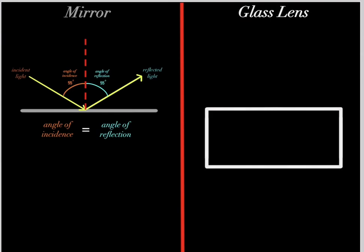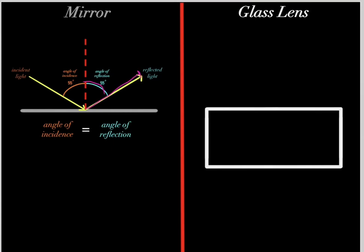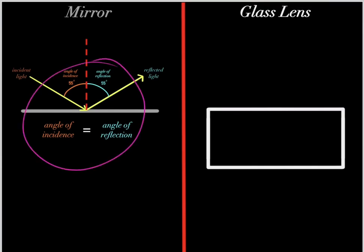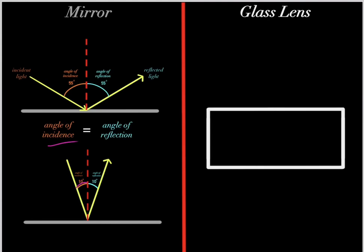Notice this angle of incidence was 55 degrees and this angle of reflection was also 55 degrees — and that's not a coincidence. The angle of incidence will always equal the angle of reflection. That is the law of reflection, something you simply have to memorize. For another example, if the angle of incidence is 10 degrees, then the angle of reflection is also 10 degrees, because the angle of incidence always equals the angle of reflection.